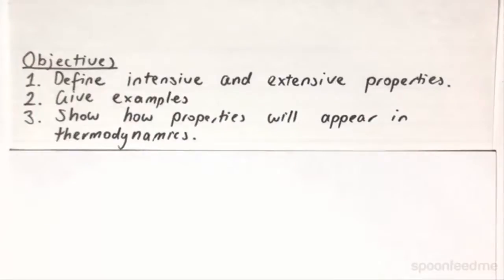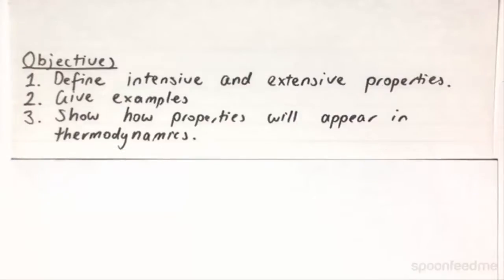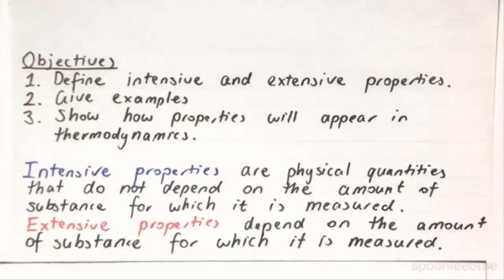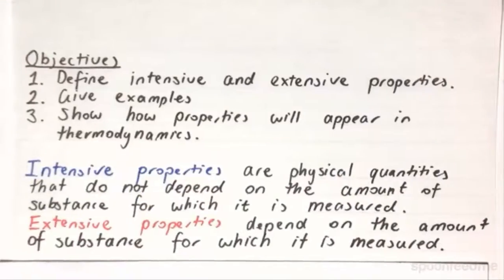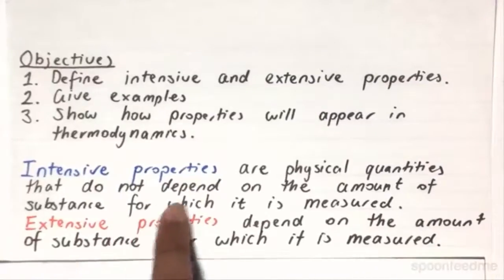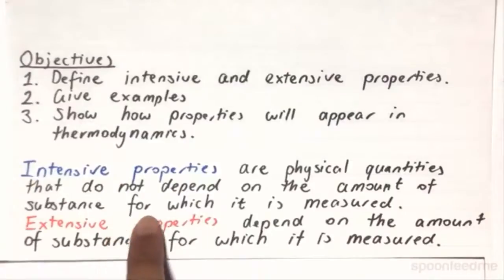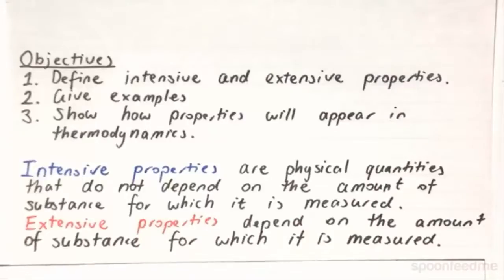So to recap, a property in a thermodynamic system refers to a microscopic element of that system. These properties can be further separated into two classes: intensive properties and extensive properties. Intensive properties are physical quantities that do not depend on the amount of substance for which it is measured, whereas extensive properties depend on the amount of the substance.